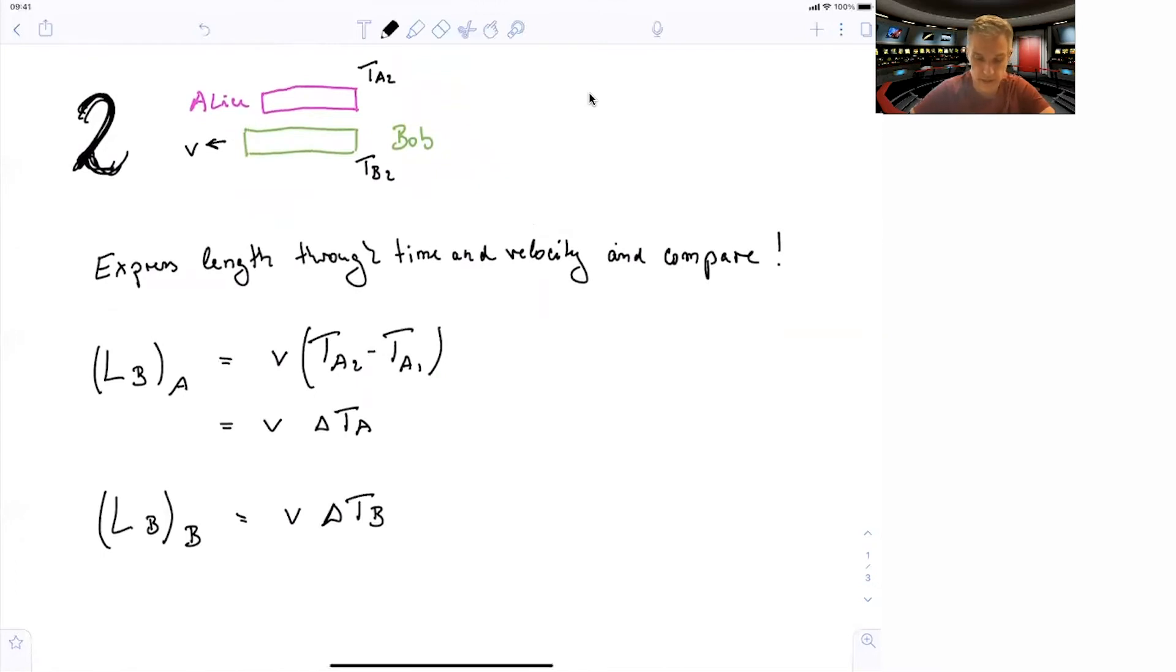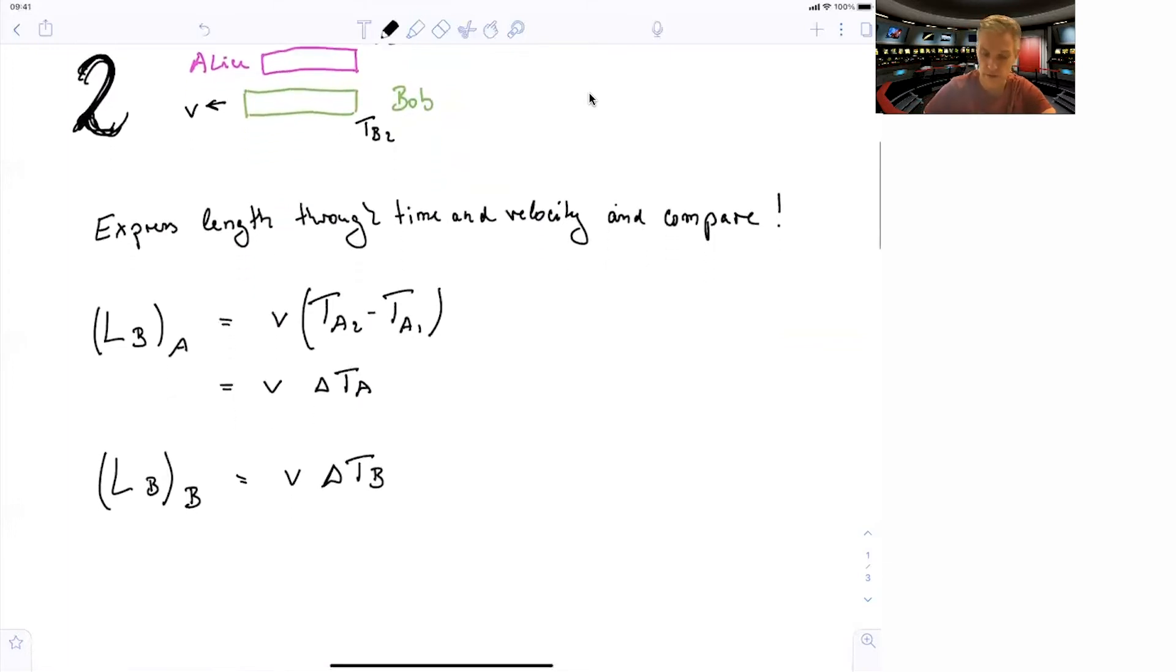We calculate the length. We can do this with the velocity. And it's simply the product of the velocity and the time difference in the pictures as shown of those two clocks. We see this for Alice, and we see this for Bob. And now we can start to compare.